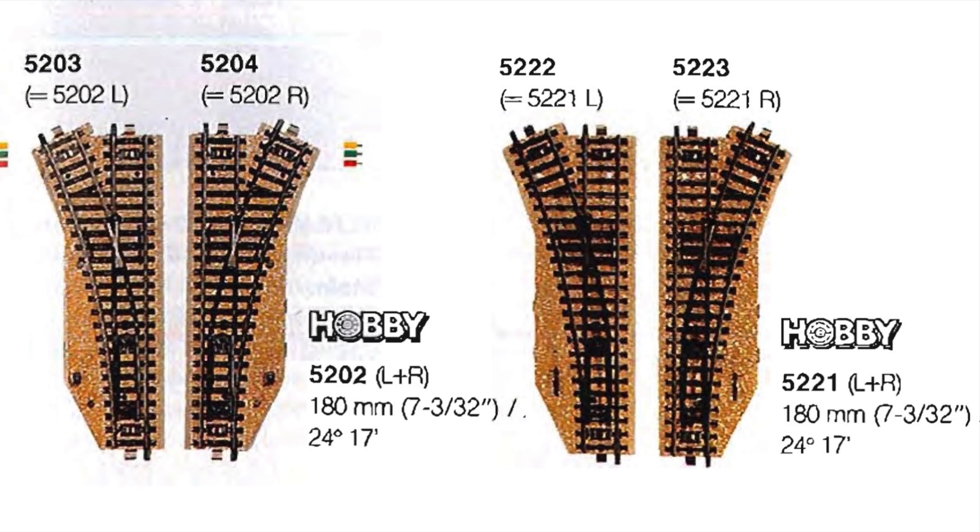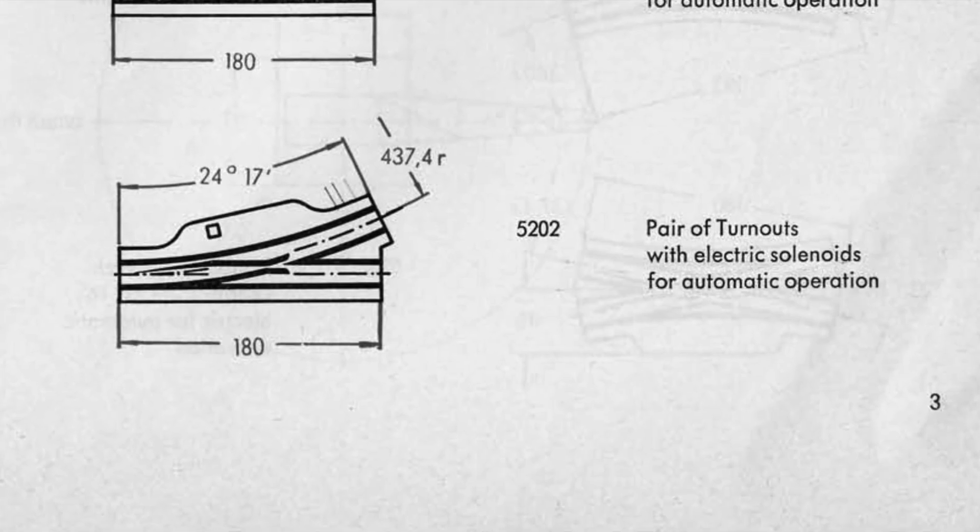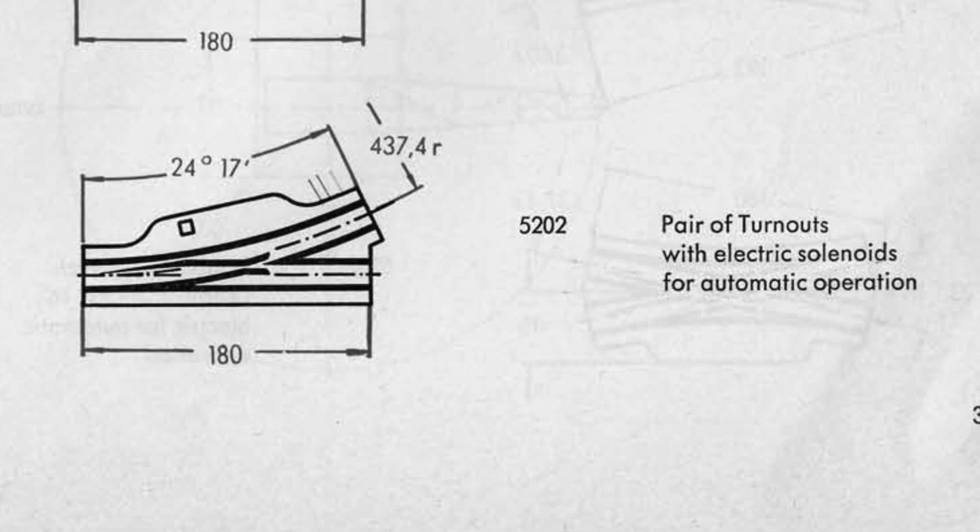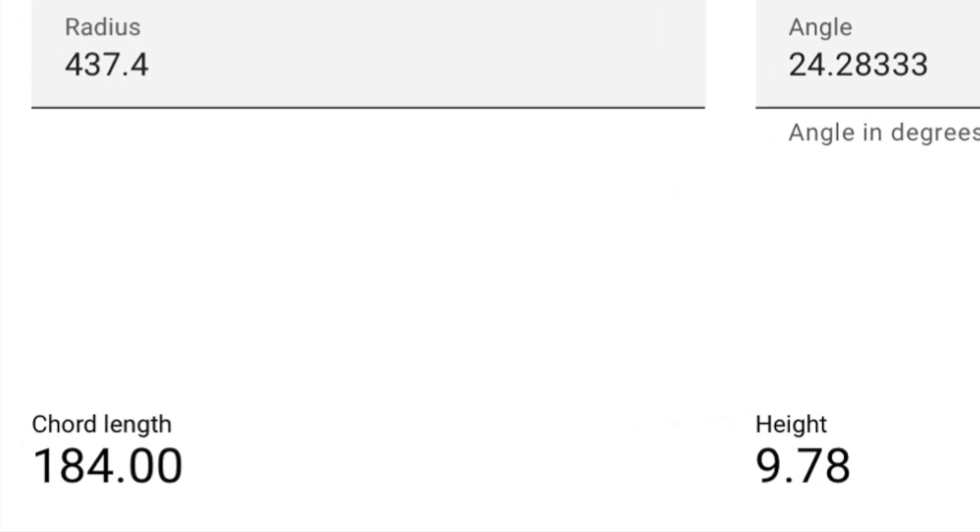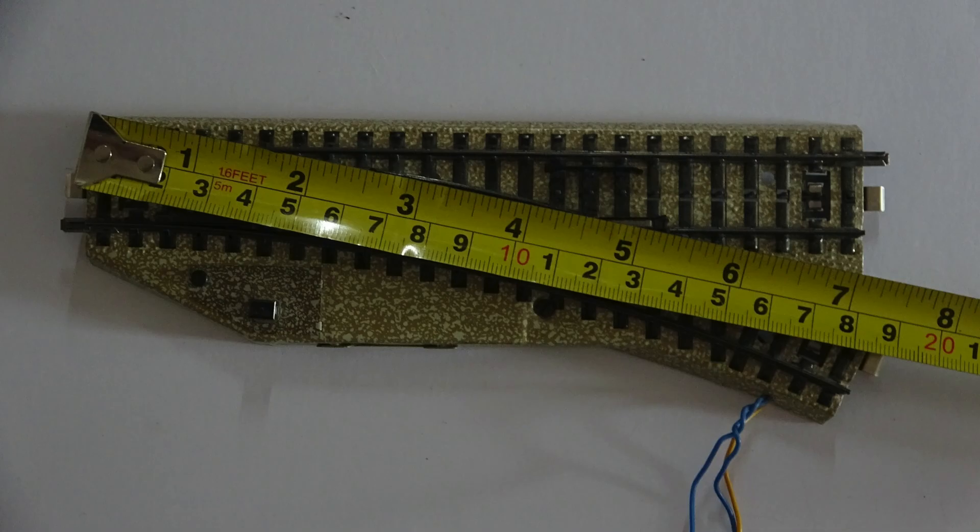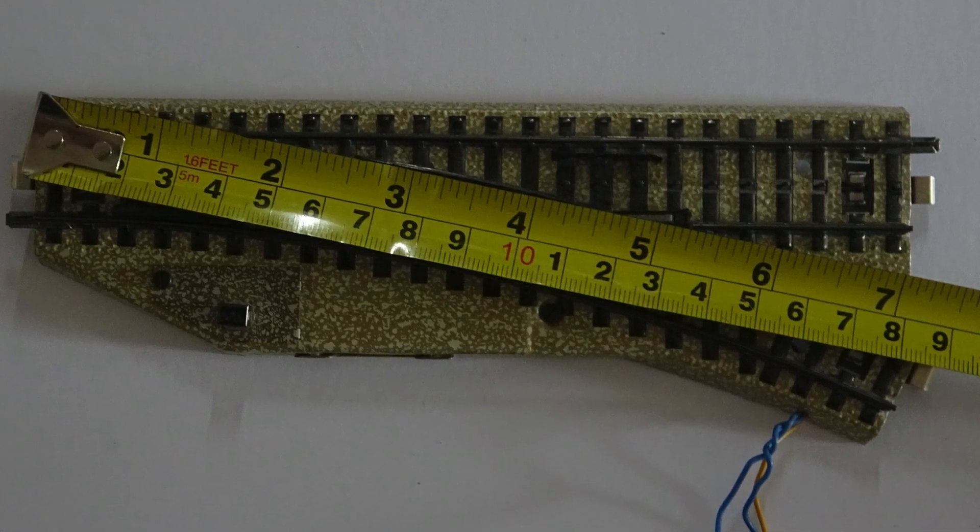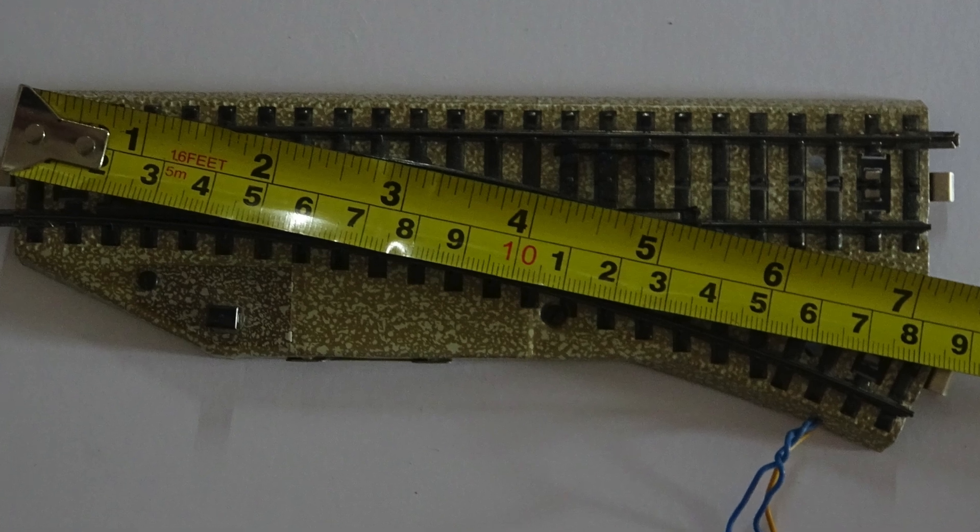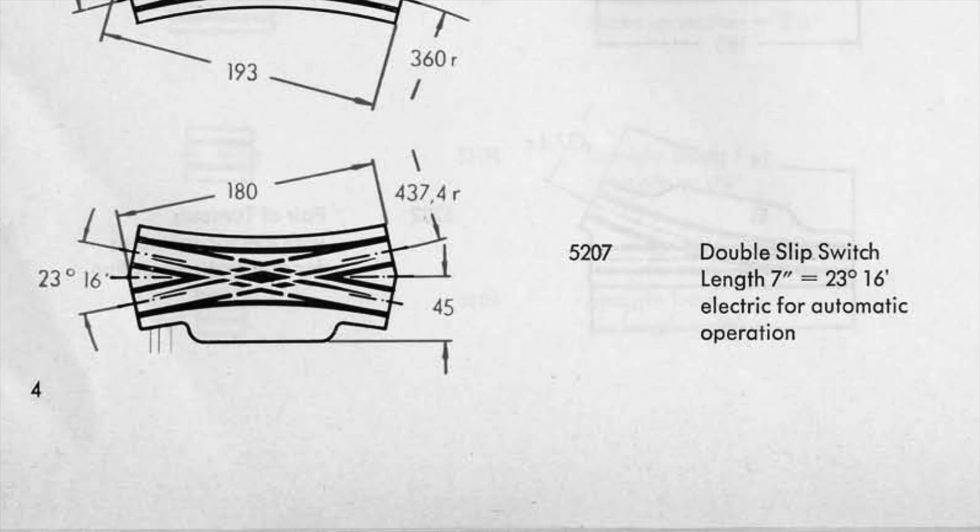Let's start with the turnout curve. Märklin states an angle of 24 degrees 17 minutes for a radius of 437.4 mm and that's in both catalogues and track plan books. I can't measure the angle with what I have but I can check the chord of such a curve. The maths tell us that it should be 184 millimeters long. So here's a 5202 turnout. I'll measure the distance between the center of both ends of the curves and the tape measurer shows 184 millimeters. That's spot on!